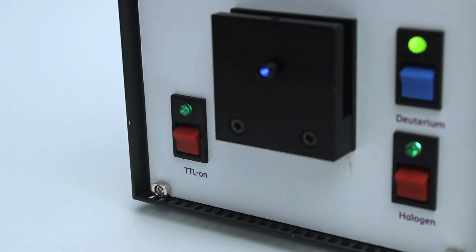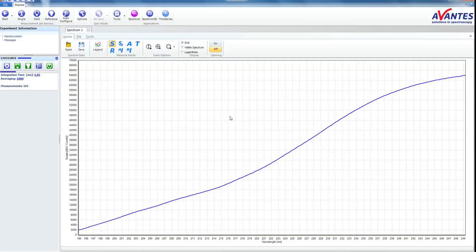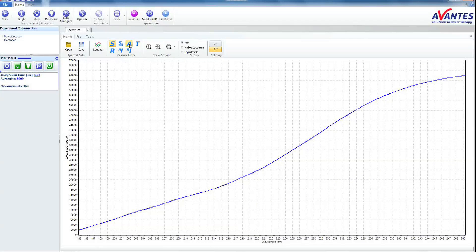Switch on the light source. To measure in absorbance mode, please click the button labeled A. You will see the spectrum around the zero line.